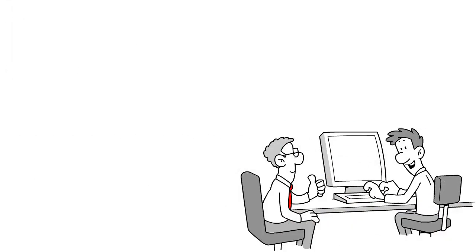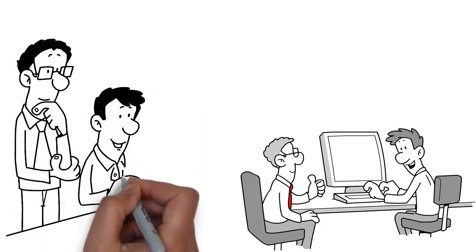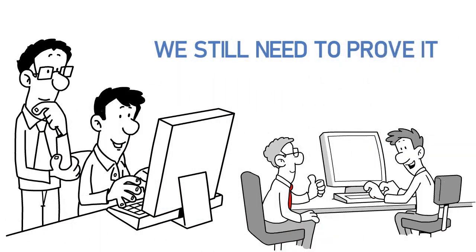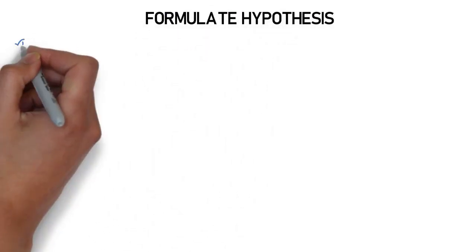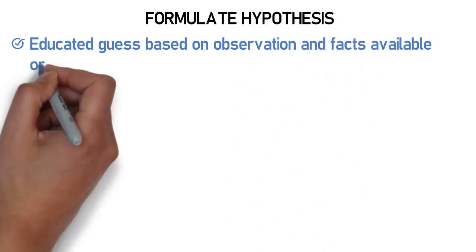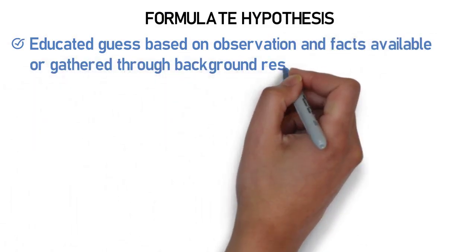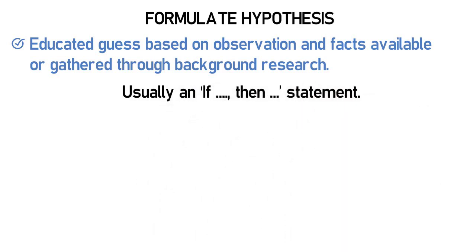Once we have conducted some research, we will have a good idea of what the answer to the question will or should be. However, we still need to prove it. We need to formulate a hypothesis. A hypothesis is a testable, educated guess based on observations and facts available or gathered through background research. Hypotheses usually take the form of an if-then statement.